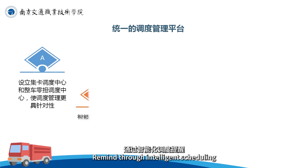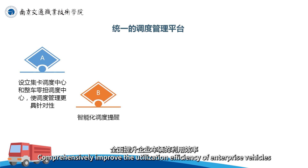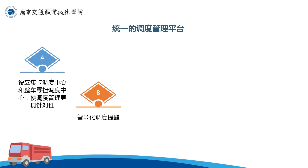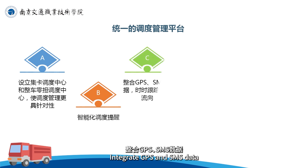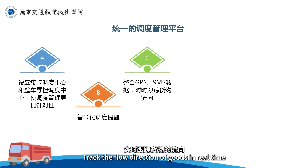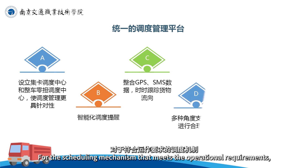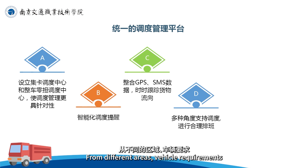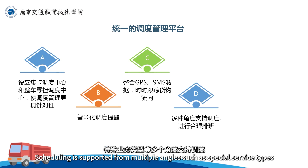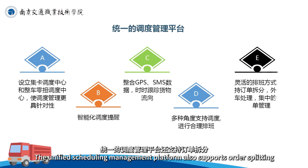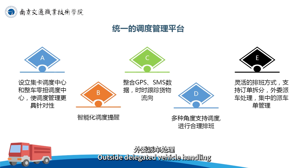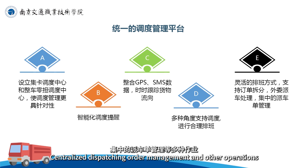通过智能化调度提醒，实现人性化的调度，全面提升企业车辆的利用效率。专门设置值班调度，整合GPS、SMS数据，实时跟踪货物的流向，及时调整并处理非正常业务运作。统一的调度管理平台从不同的区域、车辆要求、报关要求、货物属性、特殊业务类型等多个角度支持调度进行合理排班，还支持订单拆分、外委派车处理、集中的派车单管理等各种作业。